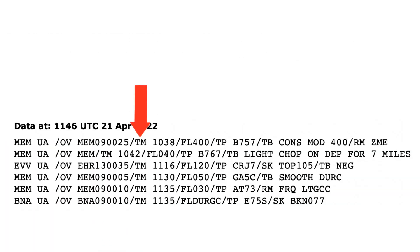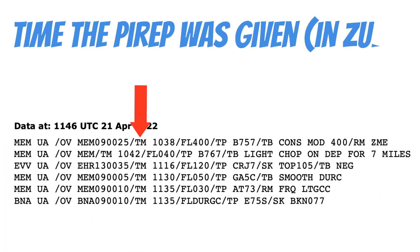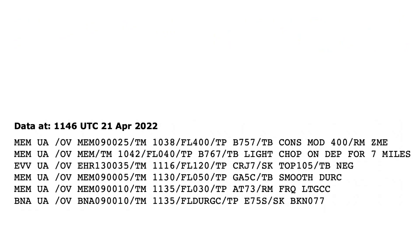Next, the letters TM stand for time — the time the PIREP was given in Zulu time. For example, one PIREP was made at 1038 Zulu and another at 1042 Zulu.